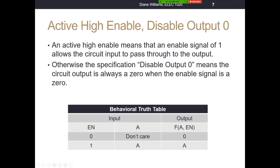We use terms like active high enable, disable, output zero. This describes how the circuit works — what the logic state of the enable signal is and the output whenever a circuit is disabled. Active high enable means that an enable signal of one allows the circuit input to pass through to the output. Otherwise, the circuit specification 'disable output zero' means the circuit output is always a zero when the enable signal is a zero.